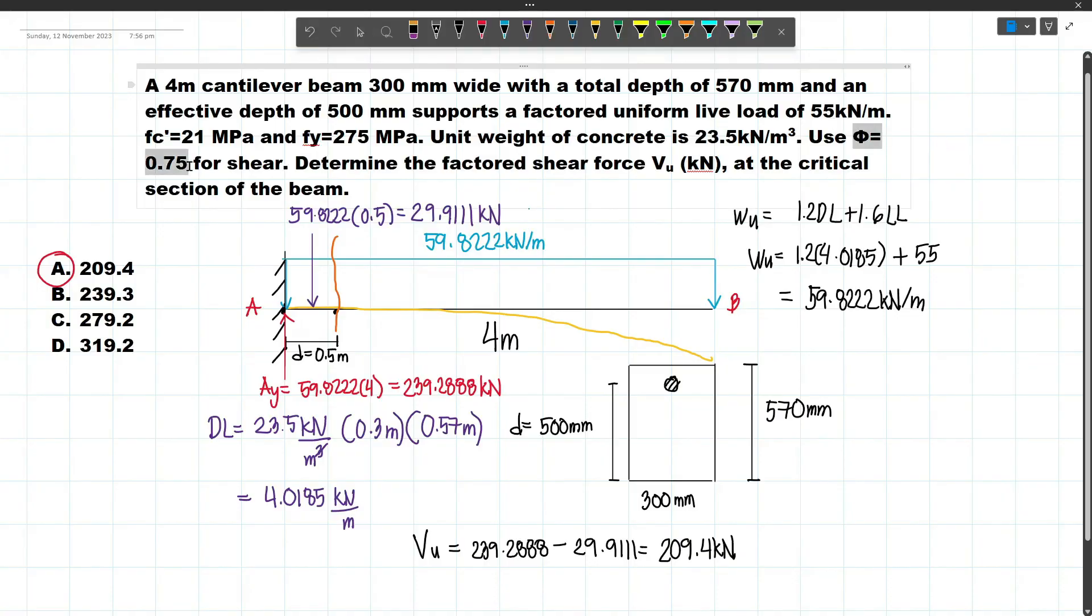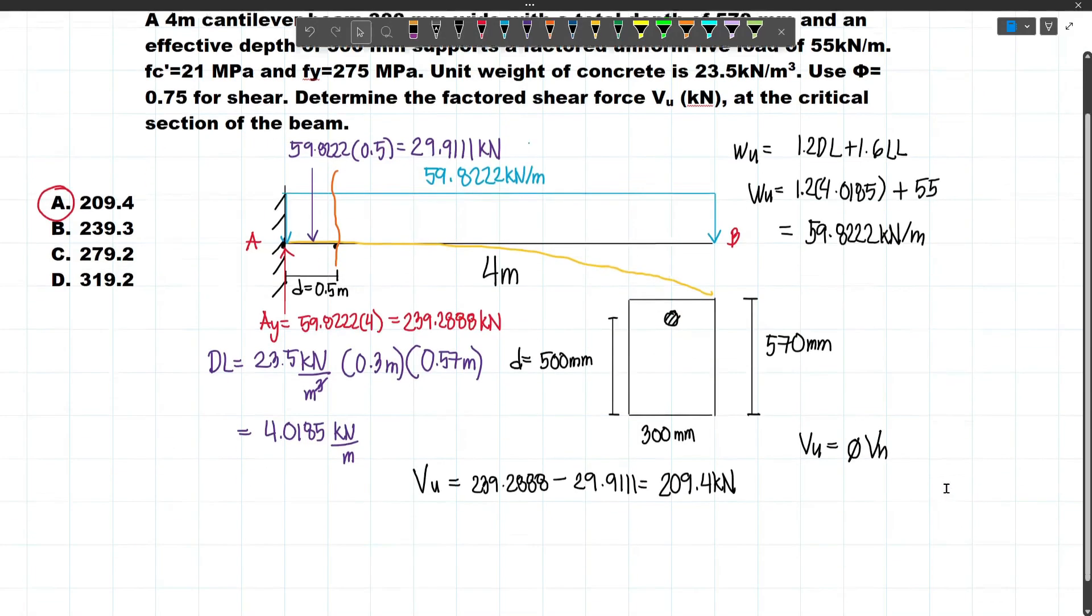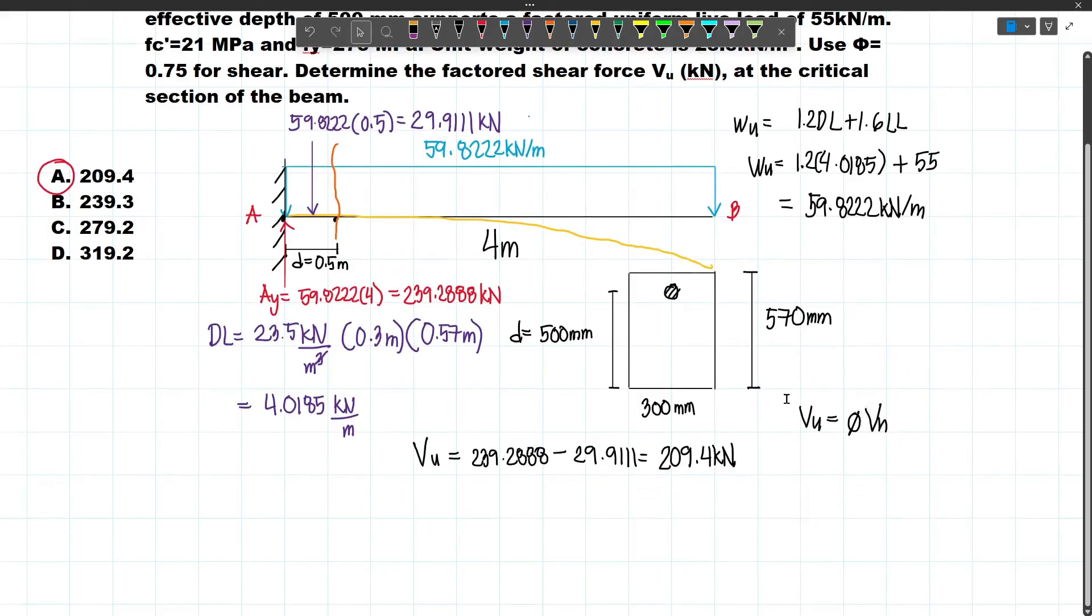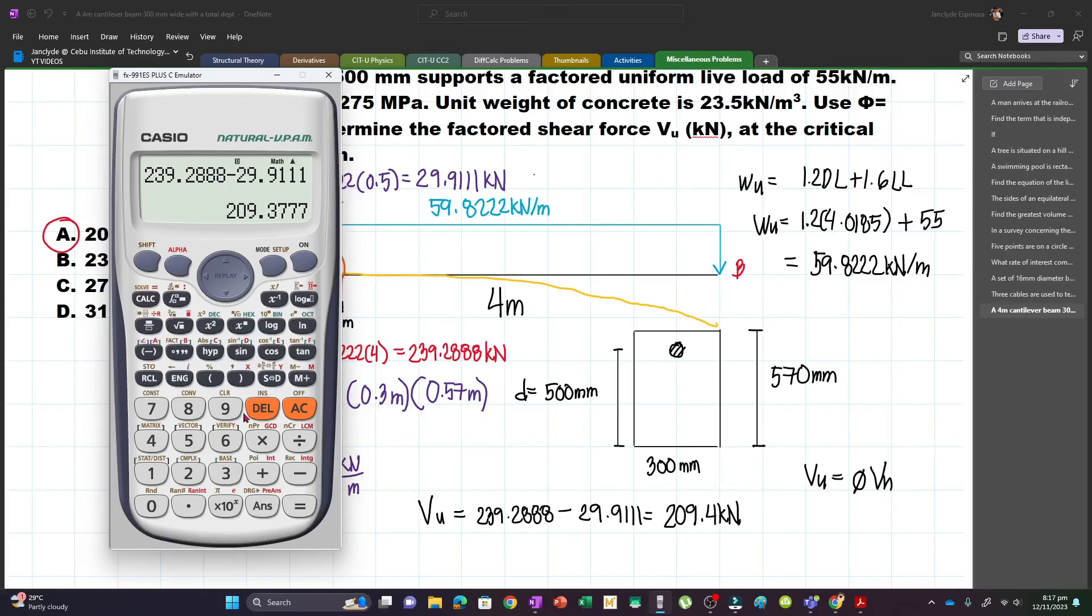Why are we not using this factor? That's because this is already the ultimate shear. You will only use this if you have the nominal shear or VN. VU equals φ VN. What if you solved for VN instead of VU? This is what will happen.